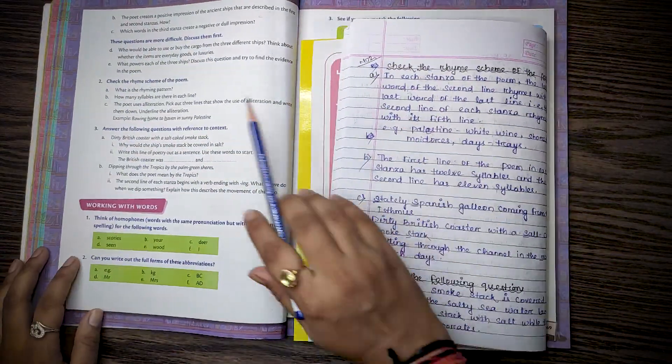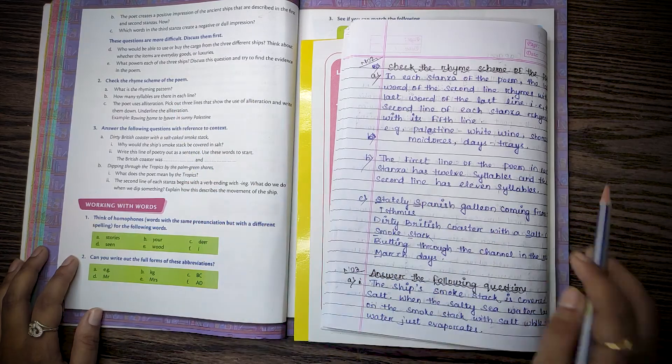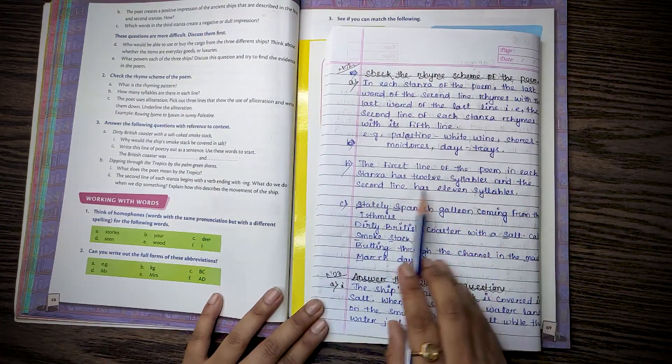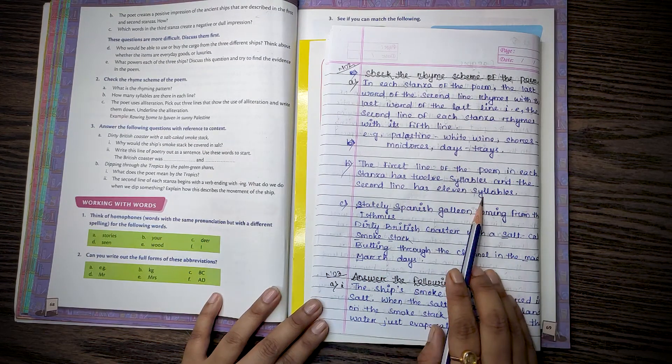Then number B. How many syllables are in each line? The first line of the poem in each stanza has 12 syllables and the second line has 11 syllables.